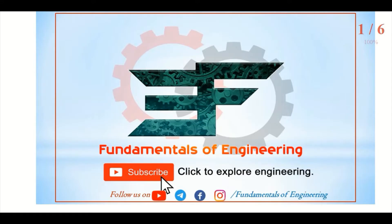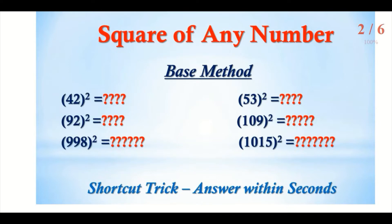Hello, my dear friends, welcome back to our channel Fundamentals of Engineering. Today we are going to see one shortcut trick to find out the square of any number — two digit, three digit, and four digit — and we can solve within a second. This shortcut trick is based on the base method. Watch the full video; if you like the content, subscribe to our channel and click the bell icon.